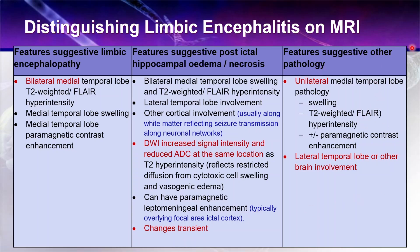Finally, we have other pathology. This is often unilateral — just affecting one temporal lobe — and may often have lateral temporal lobe involvement. If it's a tumour or inflammation, for example, it may spread to the lateral temporal lobe and will often have paramagnetic contrast involvement.